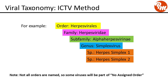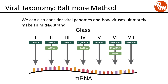Also, another note: not all orders are named, so some viruses will be part of something called 'no assigned order.' Looking at the Baltimore method, we classify viruses based on their genome. Some viruses will start with either an RNA or a DNA strand, and how they ultimately make mRNA will depend on what genome they start with.